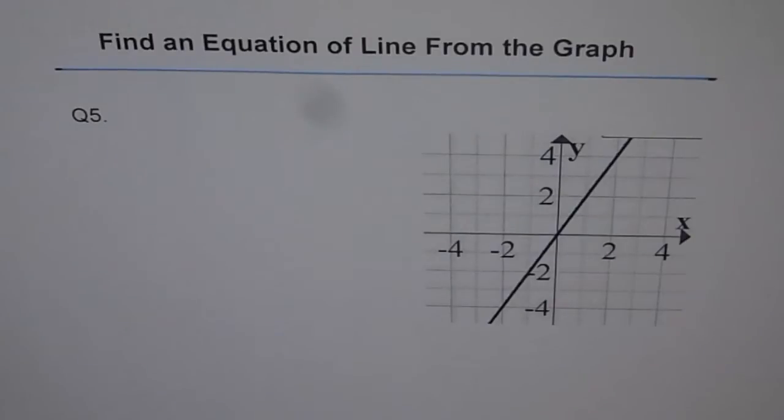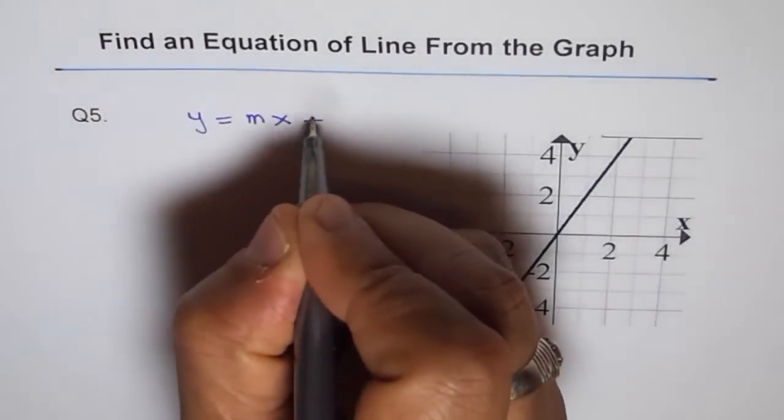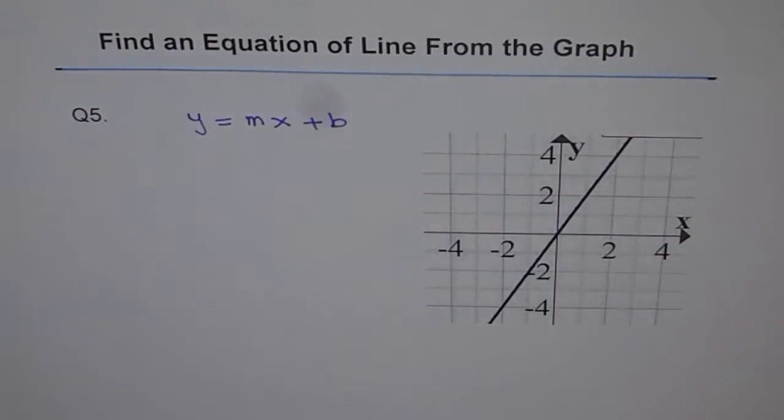We will write the equation in the form of slope intercept form which is y equals to mx plus b. As you know, m is the slope and b is the y intercept.